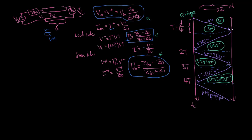One interesting thing: at the load, two lines intersect simultaneously, so the elevation there is the sum of the two — V plus plus V minus — which is how we define the load voltage. By calculating these basic quantities and drawing this out, you really have all the information to provide the voltage at any point, any time. If I give you a point in time, you find where that is, put a little dot there, and read it off.